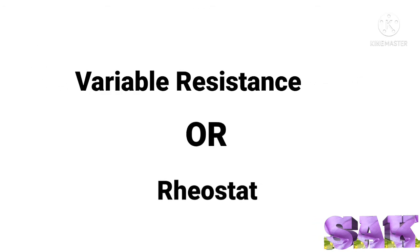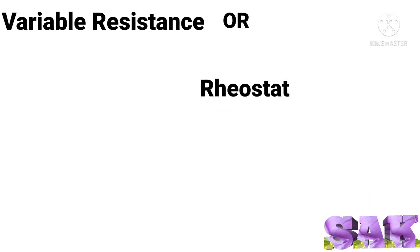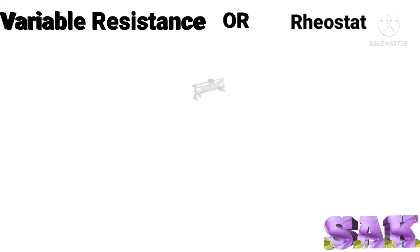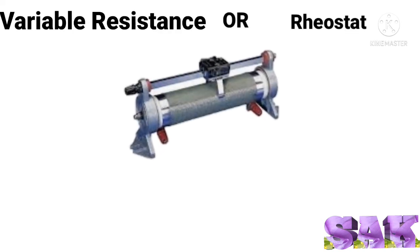Symbol of variable resistance or rheostat. This rheostat is used to change the resistance in the circuit without changing the voltage source.